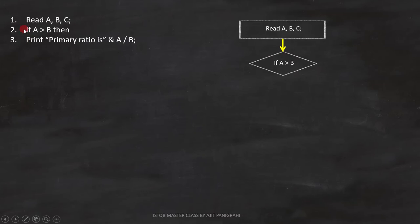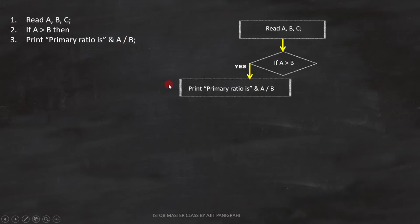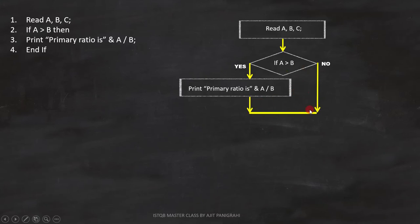If this condition is true, line number 3 — print primary ratio is A divided by B — will be executed. Since it is a statement, we can represent it like this. Line number 4 is end-if. This is where the condition on line number 2 will end, and this is how we represent it in the flowchart.